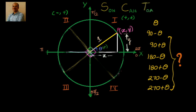This angle is 90 degrees, this angle is theta, total is 180. So this angle is automatically equal to 90 minus theta.